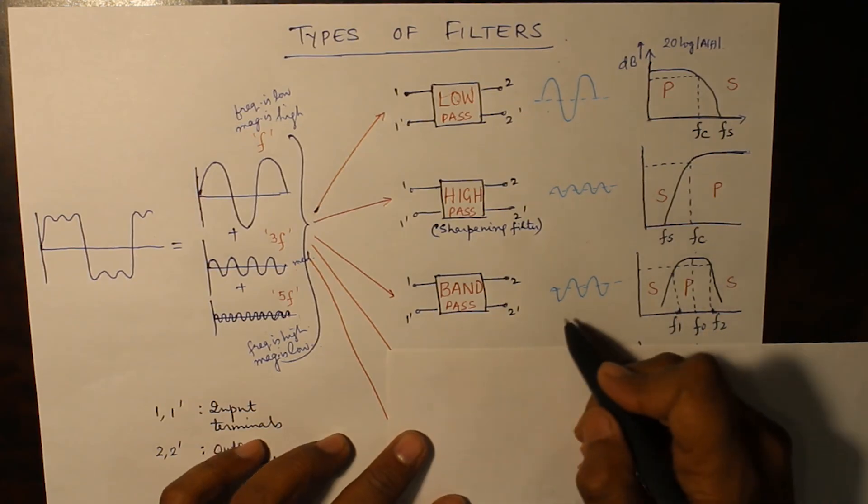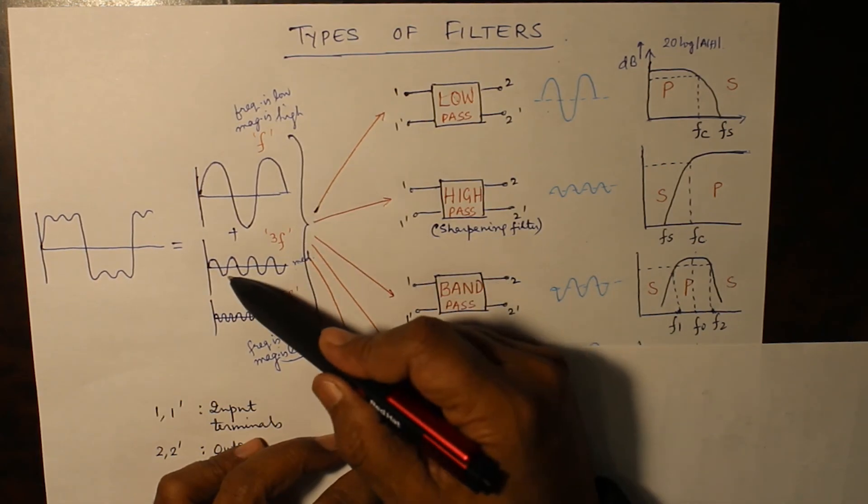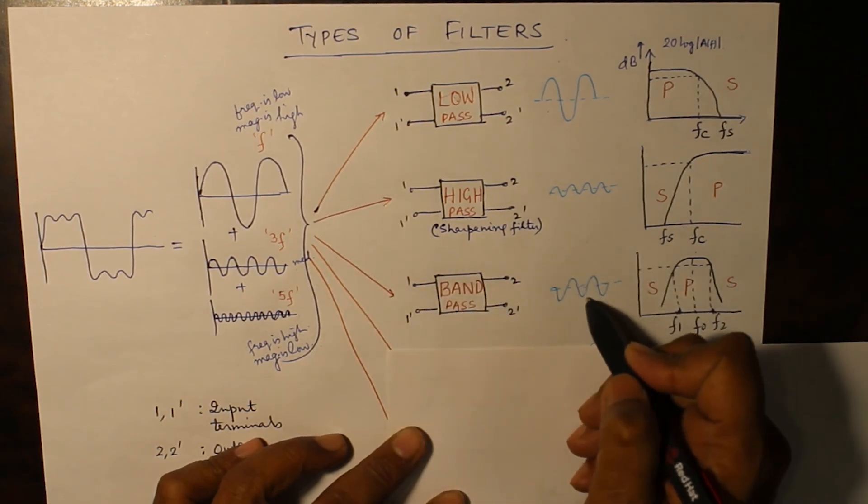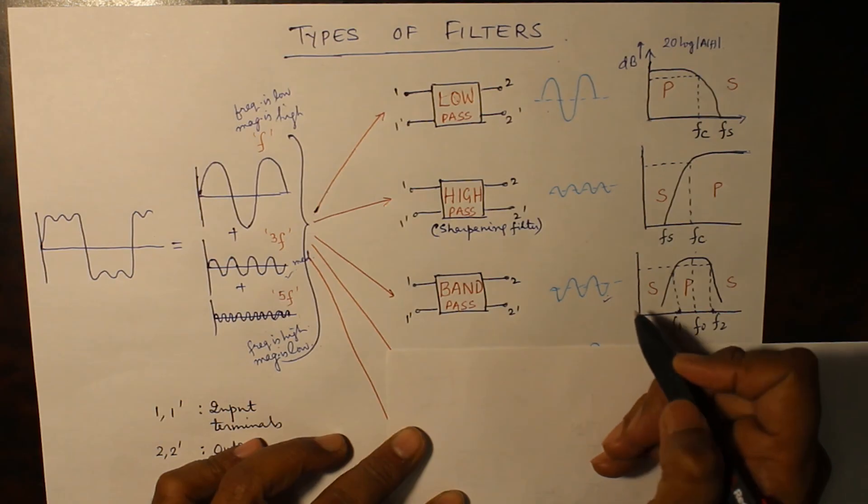Such a kind of filter is known as a band pass filter. In band pass filter you can say neither the low frequency is going nor the high frequency is going, just the middle frequency is going as it is. So it is this waveform which is being seen here.